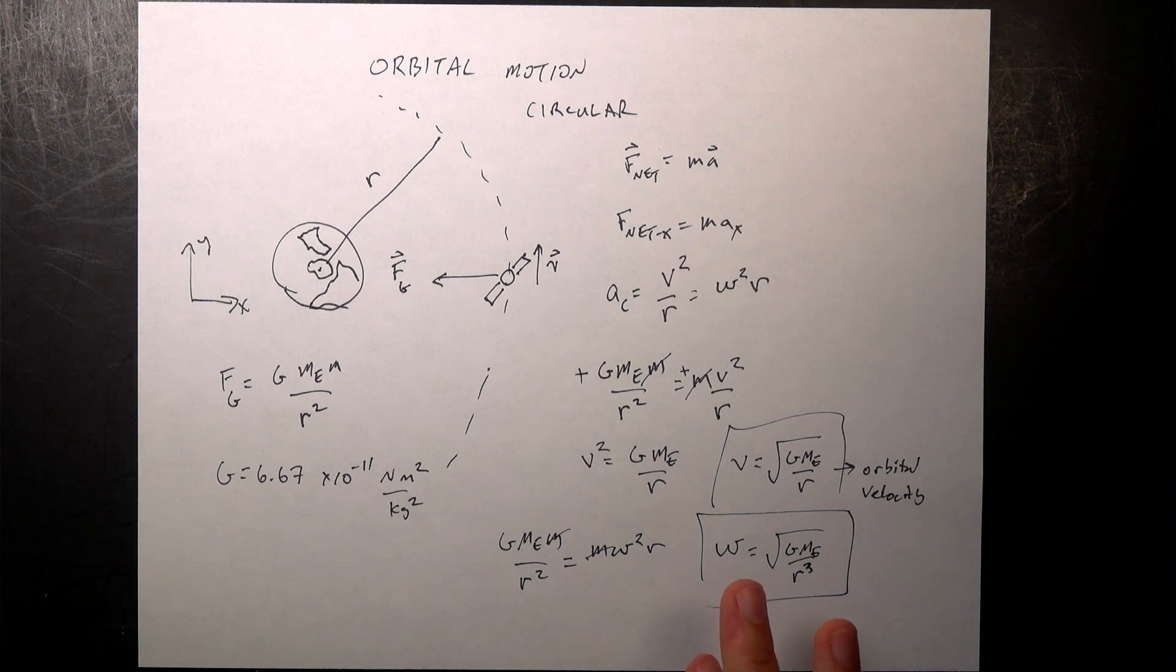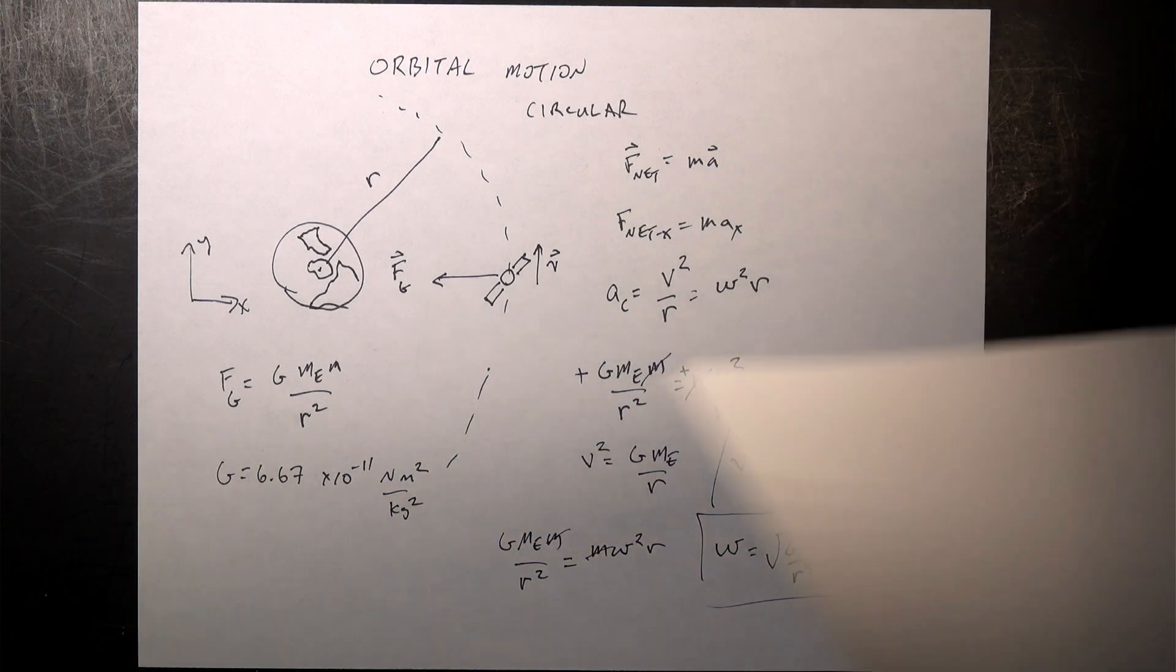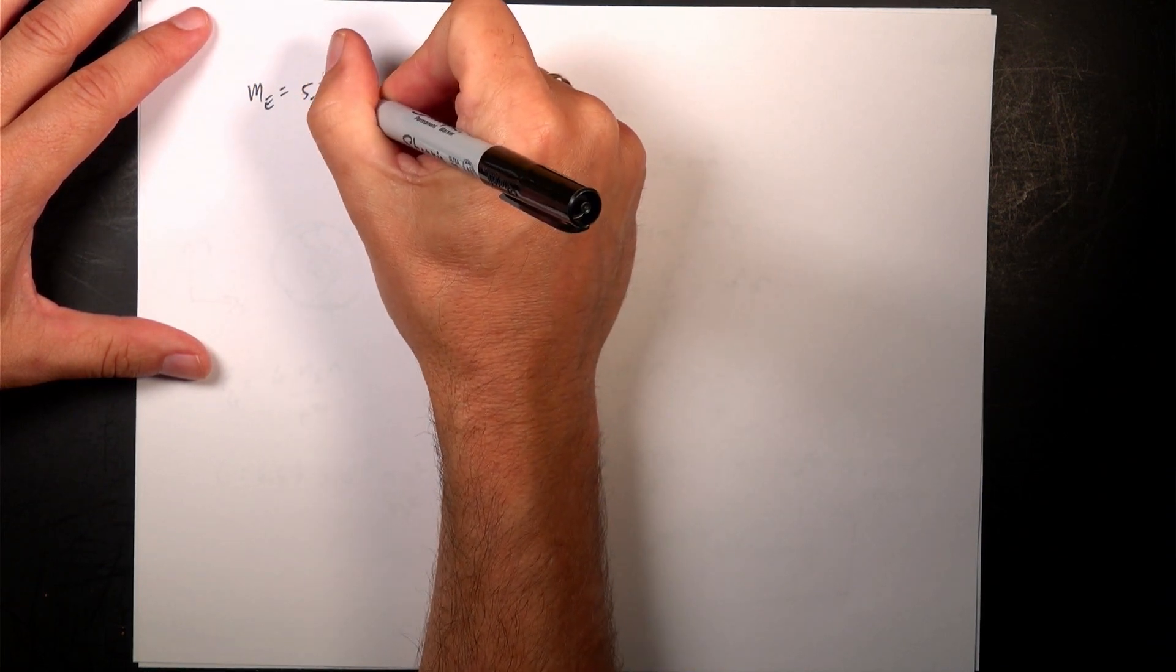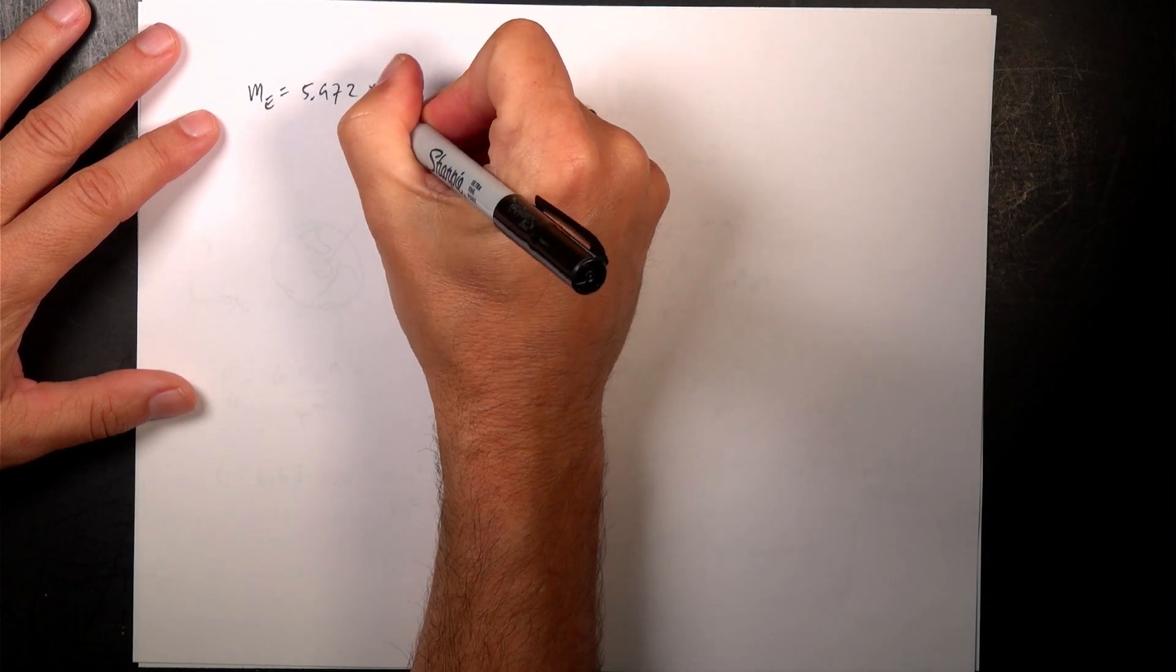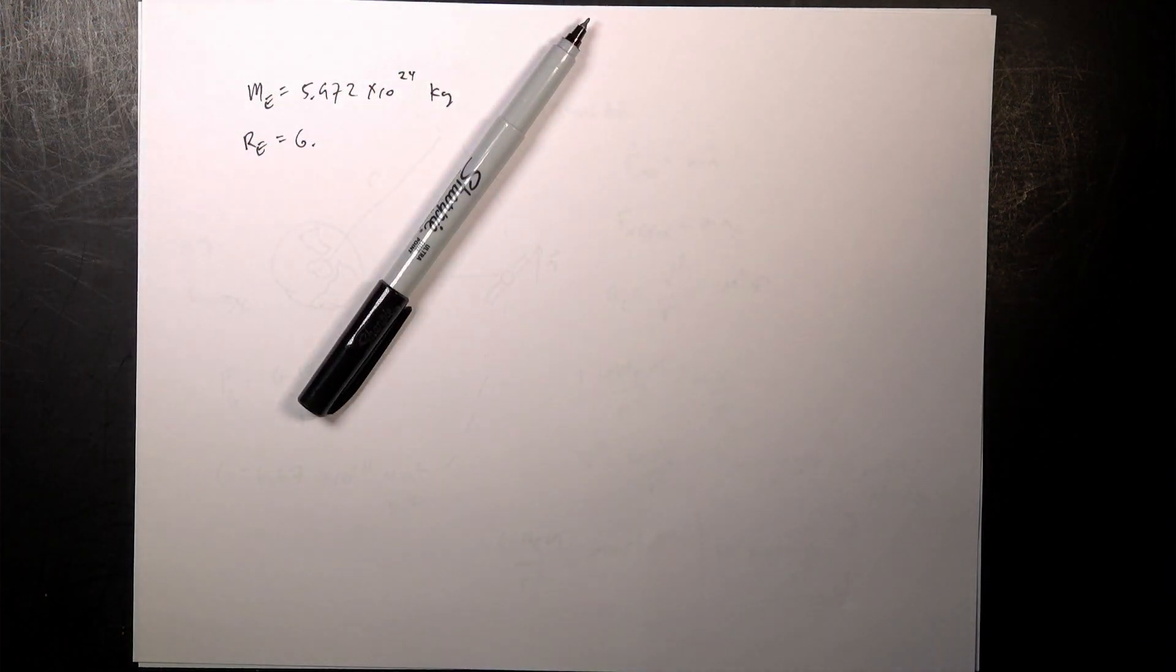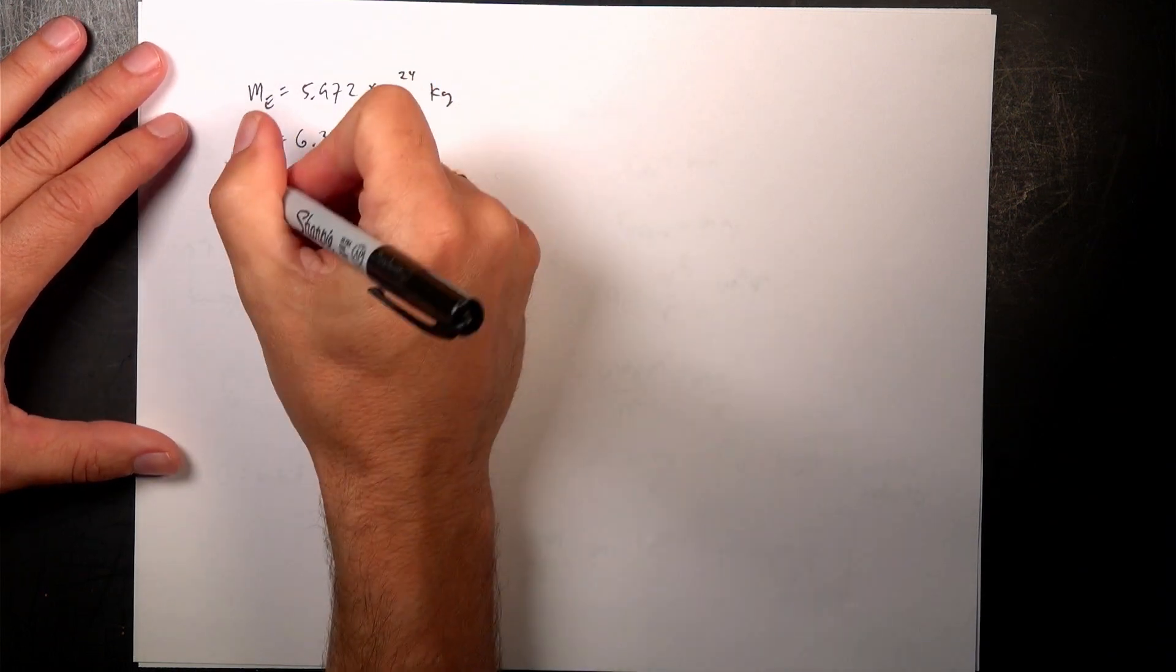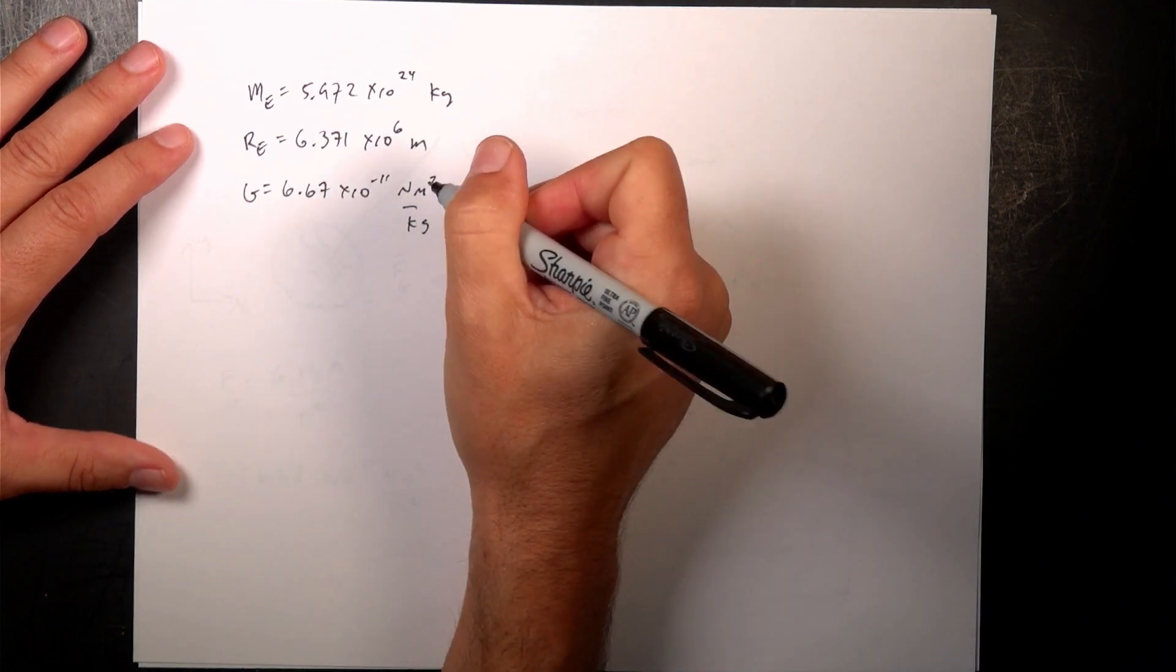So let's go ahead and calculate for the Earth how fast and the angular velocity. And then we use the angular velocity to calculate the orbital period for the space station. Okay, so I'm going to use some rough numbers here. So let's say the mass of the Earth is 5.972 times 10 to the 24th kilograms. The radius of the Earth is 6.371 times 10 to the 6th meters. And then G, 6.67 times 10 to the negative 11th newton meters squared per kilogram squared. And the last thing I need is H.